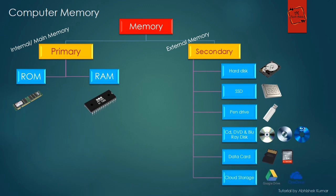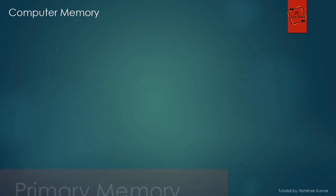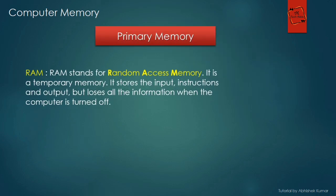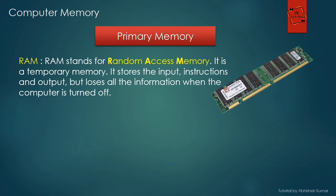Secondary memory has many types, like hard disk, SSD, pen drive, CD, DVD, Blu-ray disk, data card, cloud storage, and so on. Now let's know about these devices individually. There are only two primary memory types — the first is RAM. RAM stands for Random Access Memory. It is a temporary memory that stores the input, instruction, or output, but loses all the information when the computer is turned off.